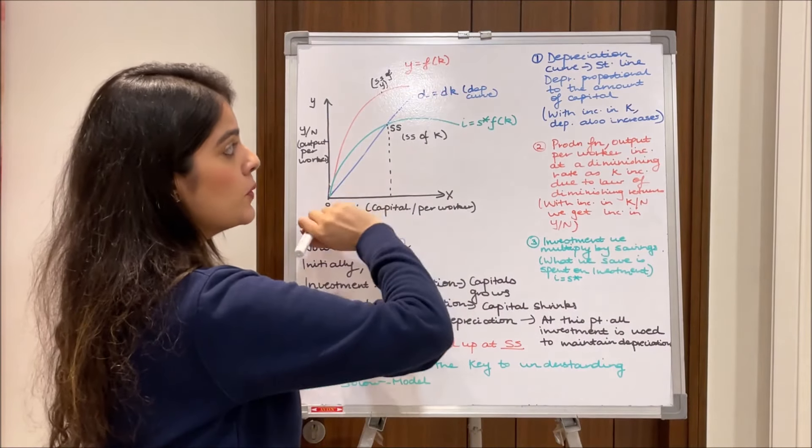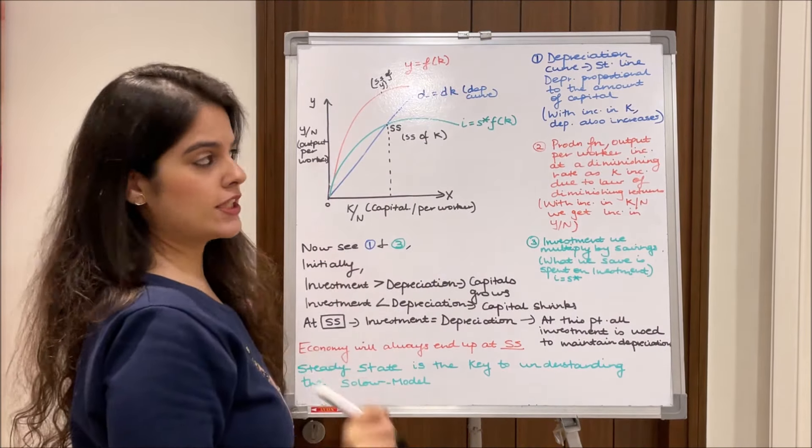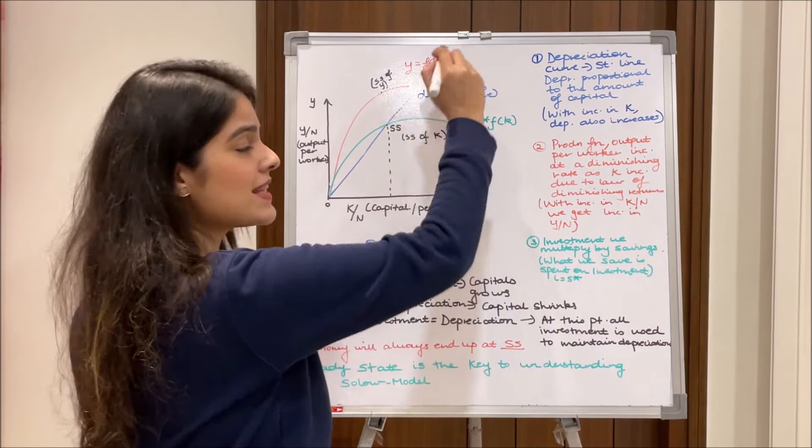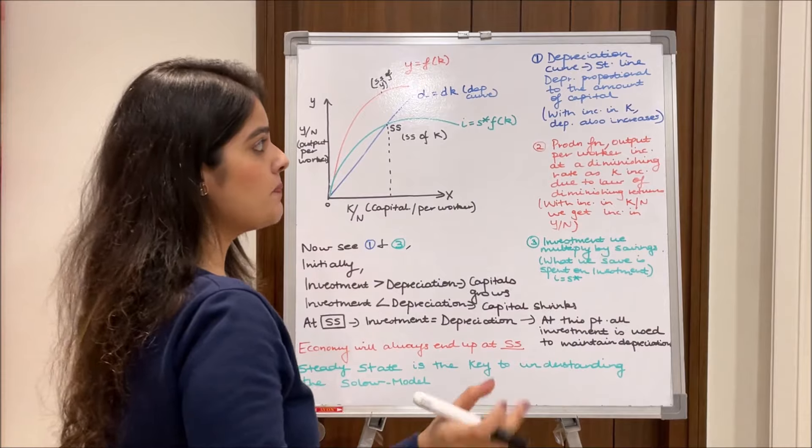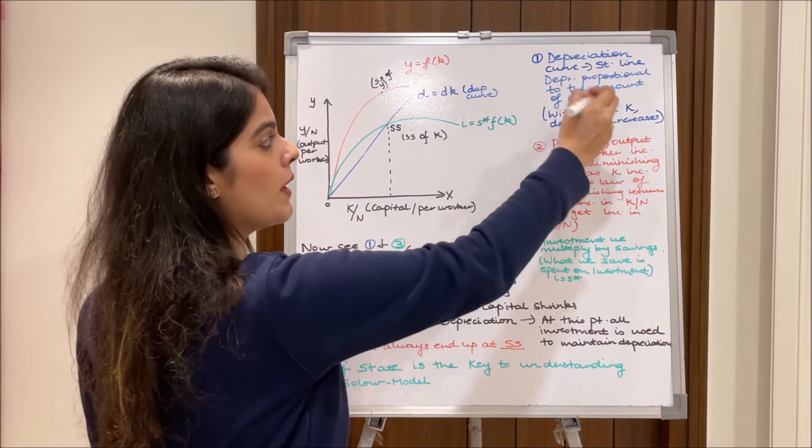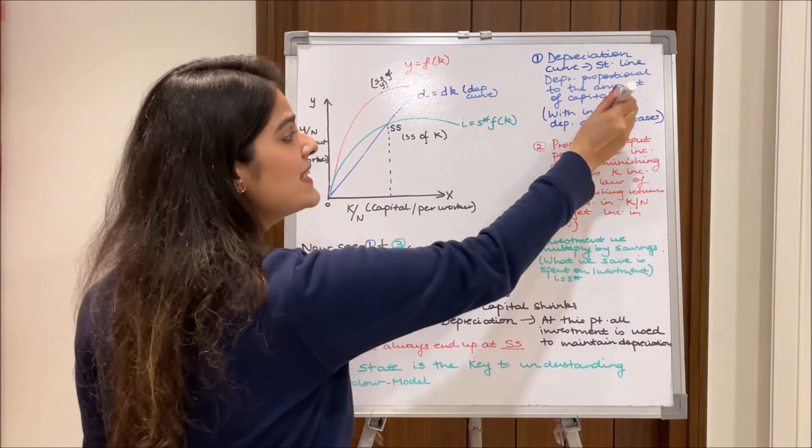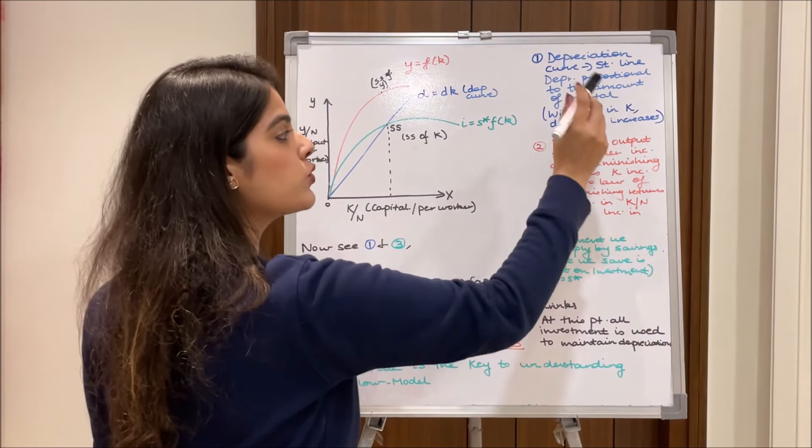Firstly I'll be talking about the blue curve which is the depreciation curve. Here we see it is a straight line, like a 45 degree line. So depreciation is proportional to the amount of capital, that is what the straight line is showing. It means with the increase in capital depreciation also increases.